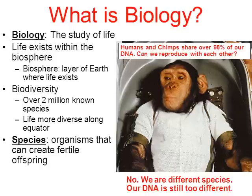Going back to the picture of the male and female human — the reason a male and female human can reproduce is they're the same species. Their DNA is very similar to one another.